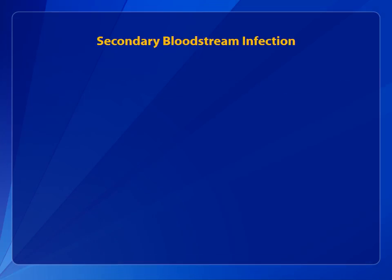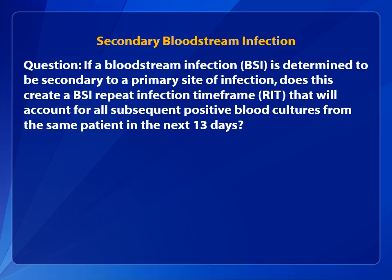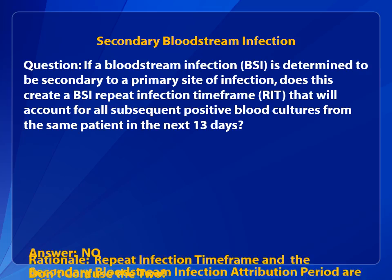NHSN frequently receives questions about the correct application of the repeat infection time frame, or RIT, concept as it relates to secondary bloodstream infections. We are often asked: if a bloodstream infection, or BSI, is determined to be secondary to a primary site of infection, does this create a BSI RIT that will account for all subsequent positive blood cultures from this patient for the next 13 days? The answer is no.